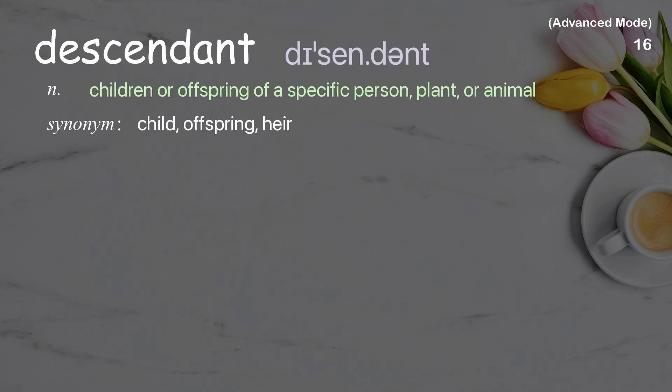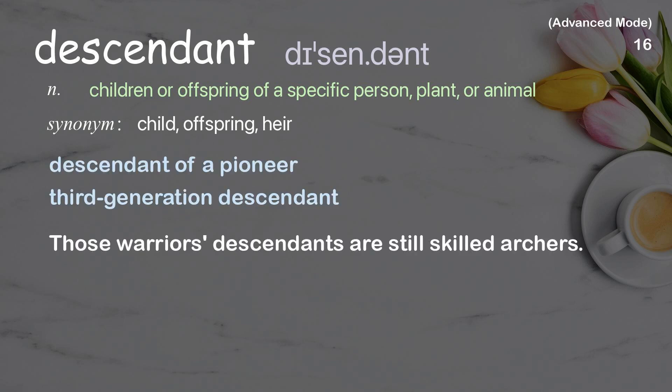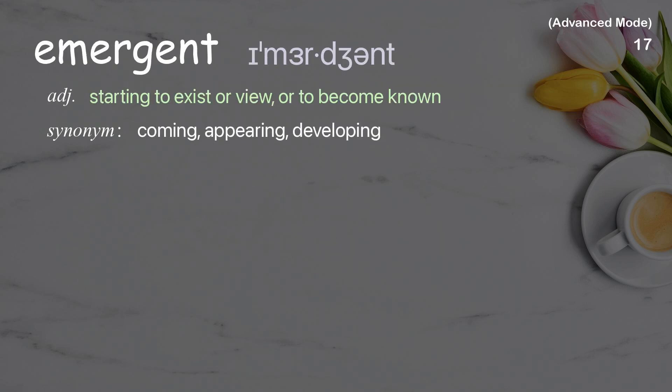Descendant: Children or offspring of a specific person, plant, or animal. Examples: Descendant of a pioneer.